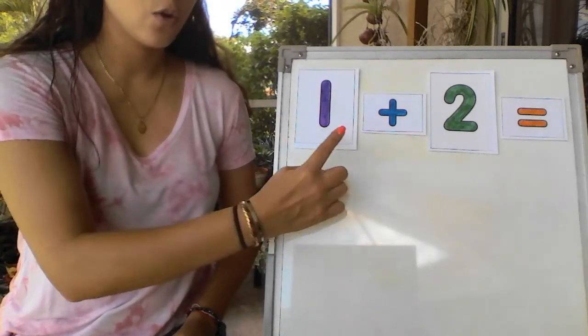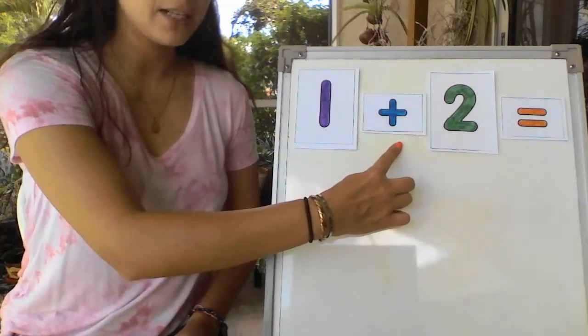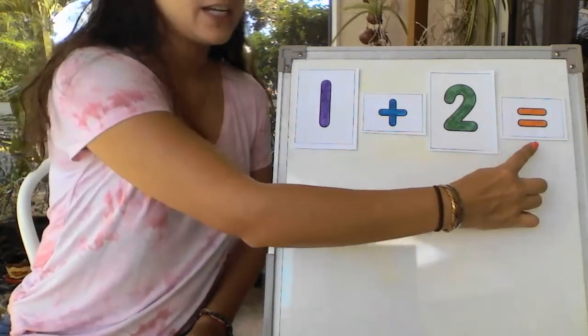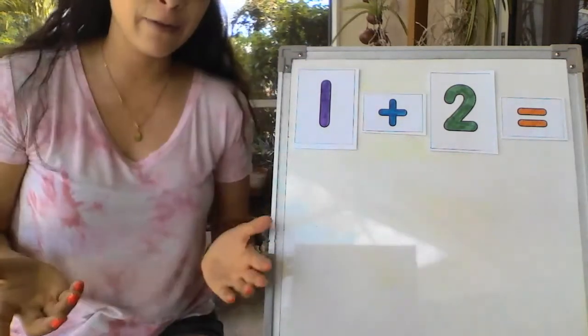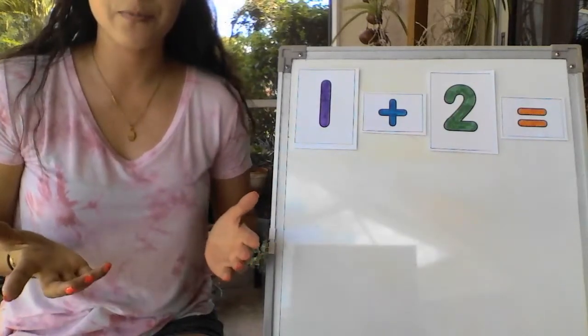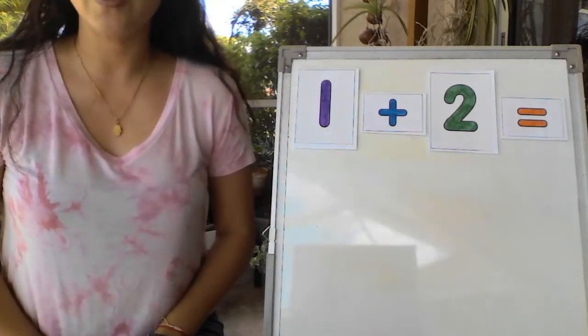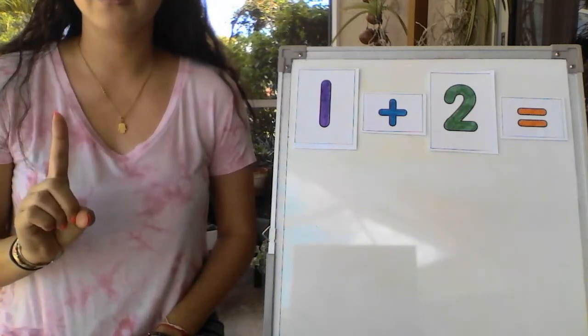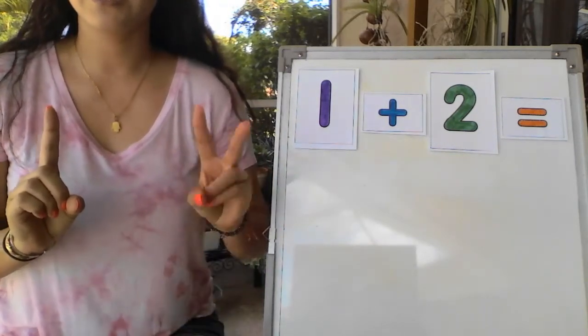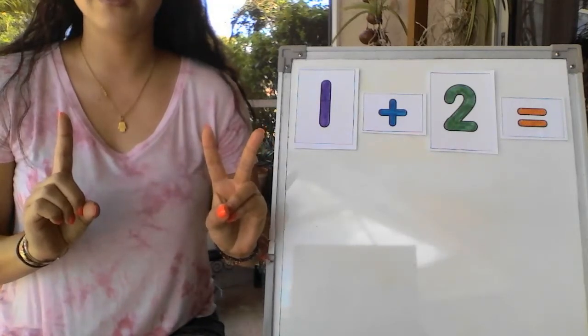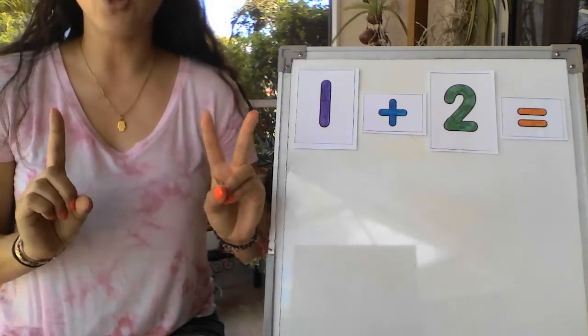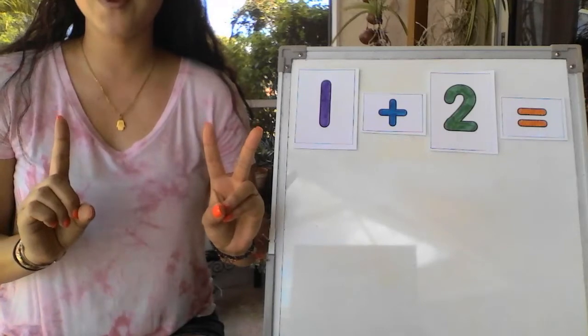This says 1 plus 2 equals. So we have to figure out what does 1 plus 2 equal. The first strategy I'm going to teach you is with our fingers. So what you're going to do is you're going to put up 1 on one hand and 2 on the other hand. Now we count up all the fingers together. Let's do it together. Ready?